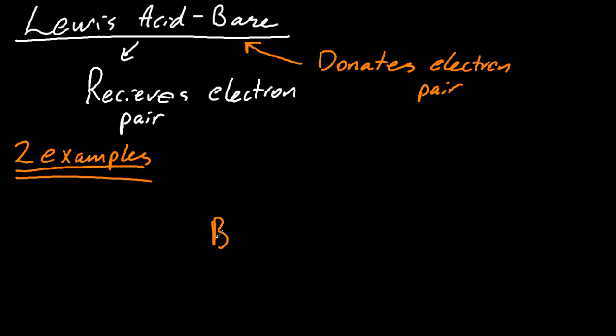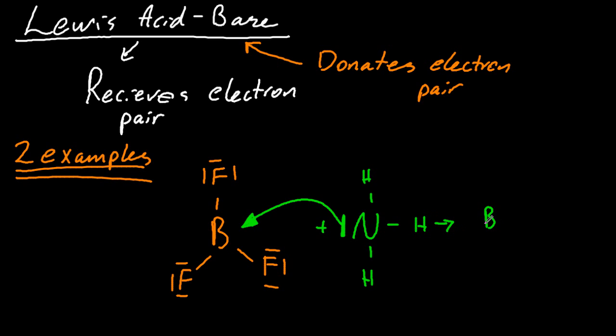Two examples, these are the two they always ask. So boron trifluoride and ammonia. So the lone pair from the nitrogen goes to the boron to form this exotic chemical here.